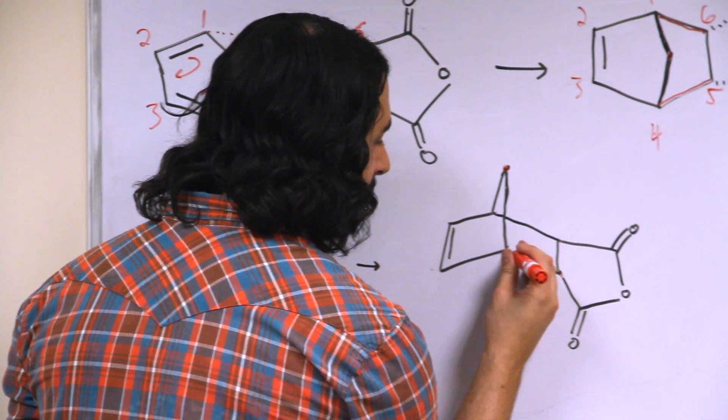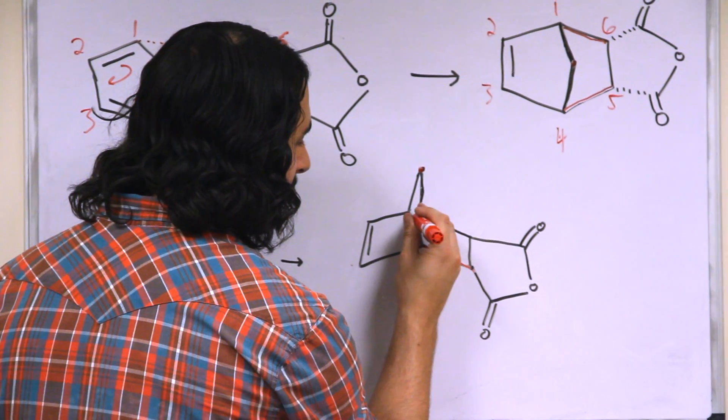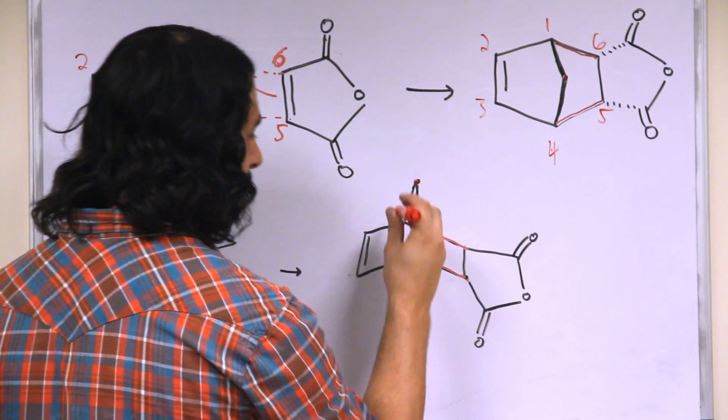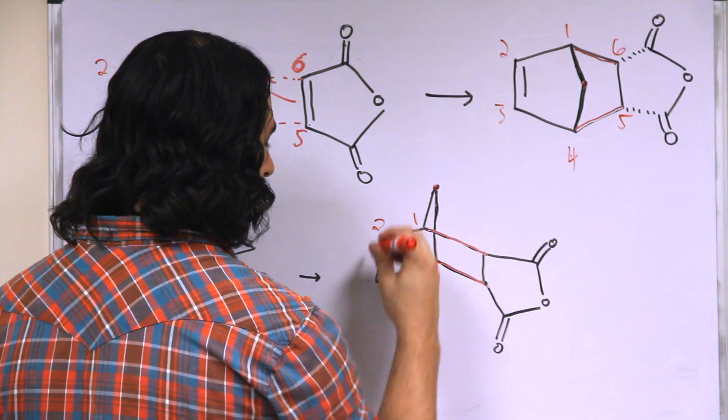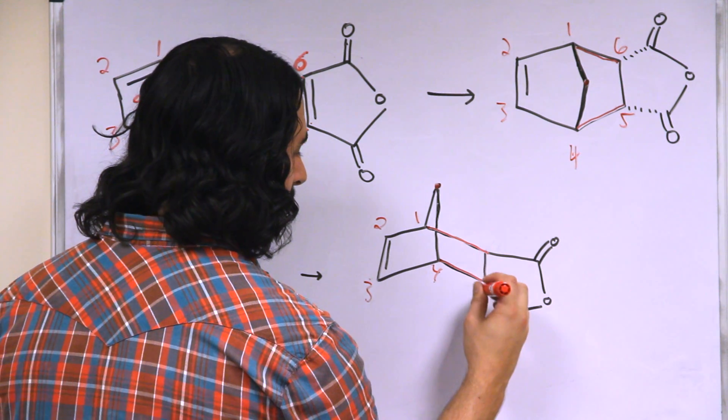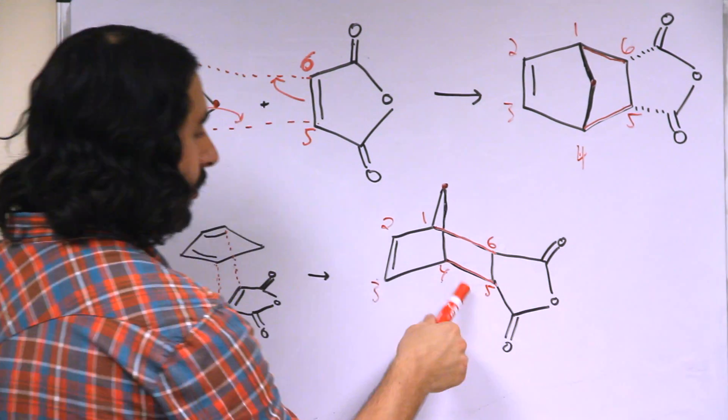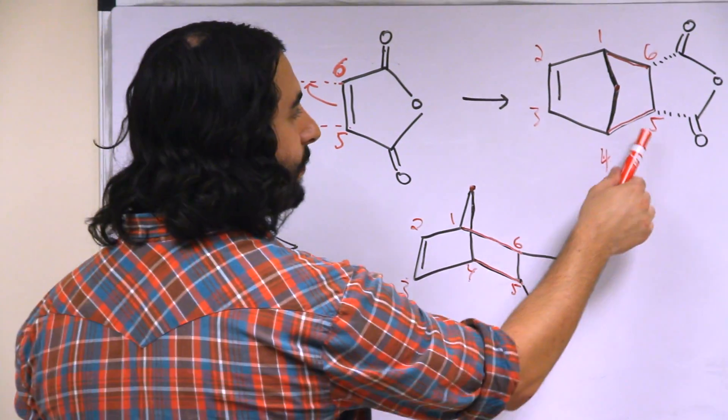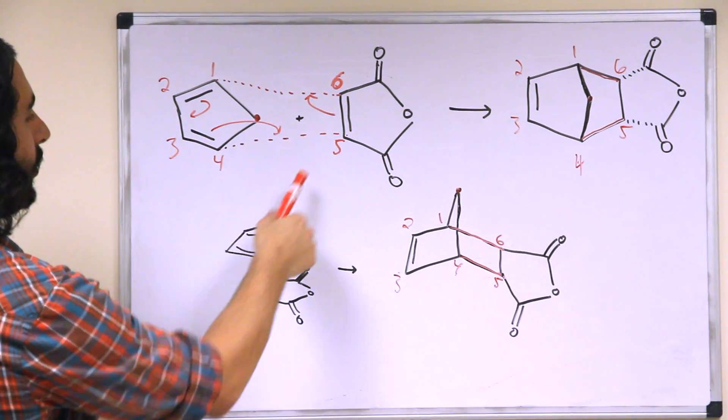And then here are these two new bonds that are forming the new six-membered ring. So let's go ahead and number this one. We've got one, two, three, four, five, six. So those are the carbons that correspond to these, which are the ones that correspond to these.